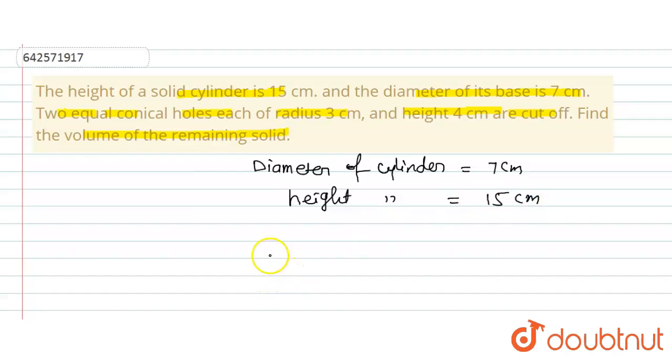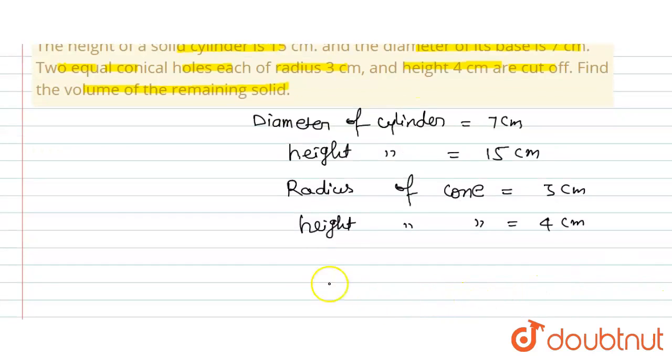And the radius of cone is equal to 3 centimeters, and height of cone is equal to 4 centimeters. Now first of all, we will find the